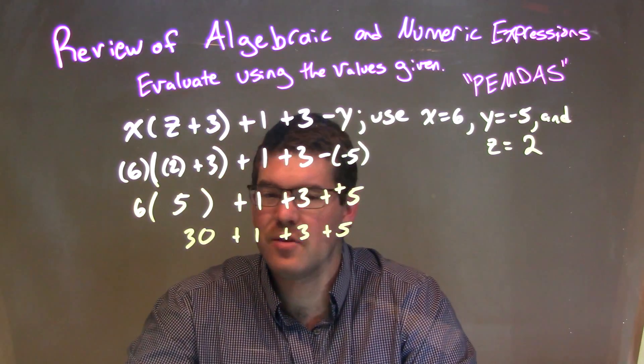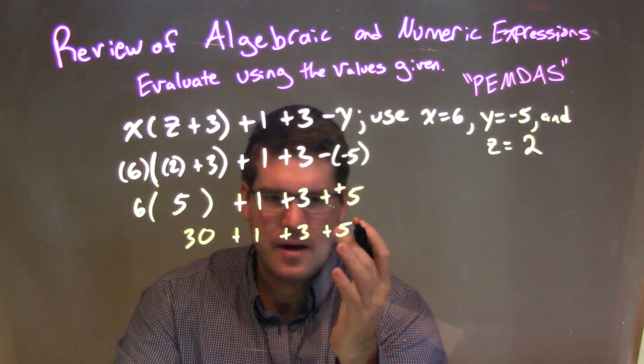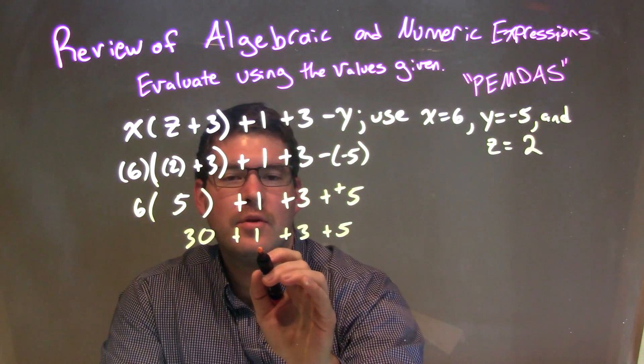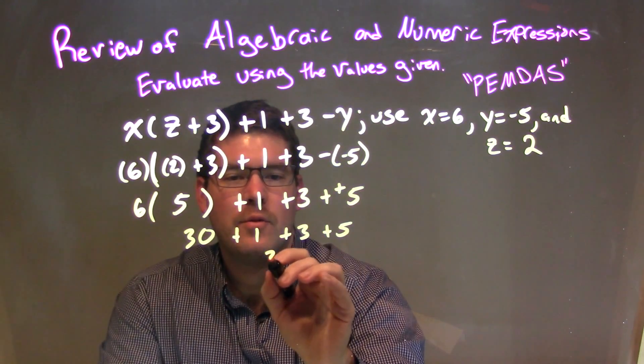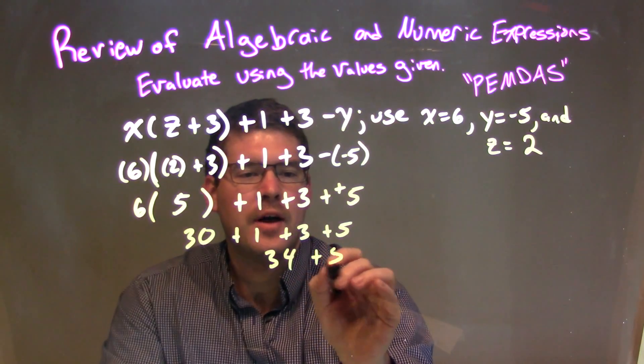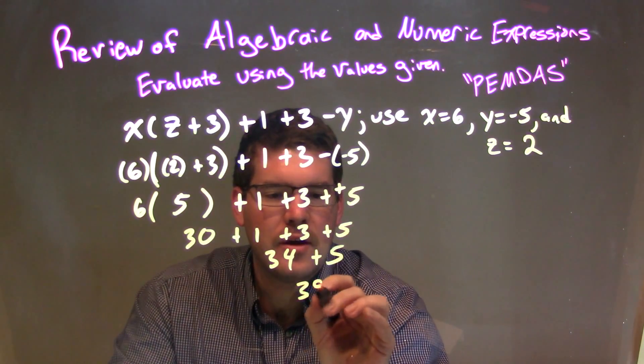At this point, it's all addition. So, it really doesn't matter which one we add first. Let's just go left to right here. 30 plus 1 is 31. Plus 3 is 34. So, the 34 here, plus 5. Then, 34 plus 5 is 39.